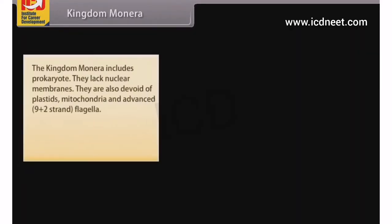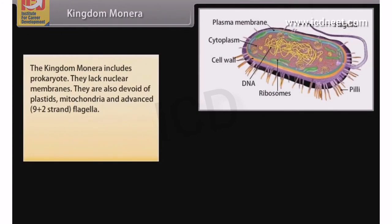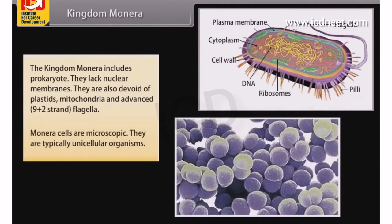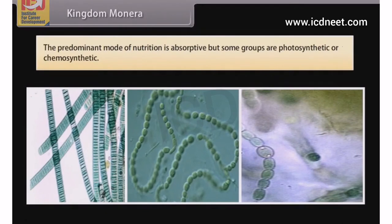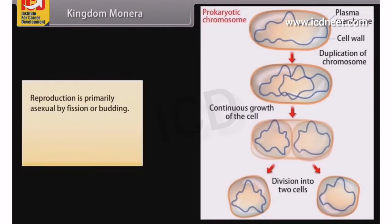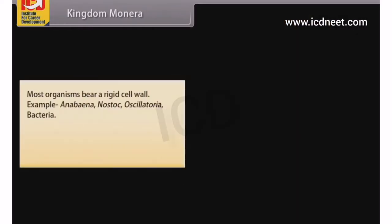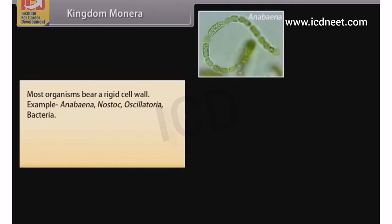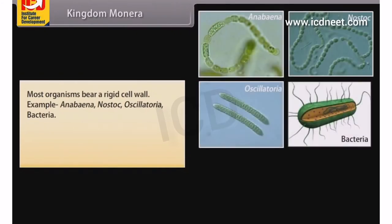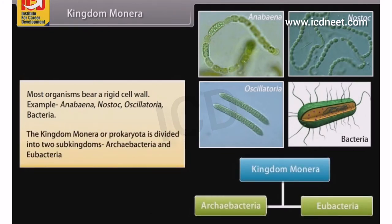Kingdom Monera includes prokaryotes. They lack nuclear membranes and are devoid of plastids, mitochondria, and advanced 9+2 strand flagella. Monera cells are microscopic and typically unicellular. The predominant mode of nutrition is absorptive, but some groups are photosynthetic or chemosynthetic. Reproduction is primarily asexual by fission or budding; protosexual phenomena also occur. Most organisms bear a rigid cell wall. Examples include Anabaena, Nostoc, Oscillatoria, and Bacteria. Kingdom Monera (Prokaryota) is divided into two sub-kingdoms: Archibacteria and Eubacteria.